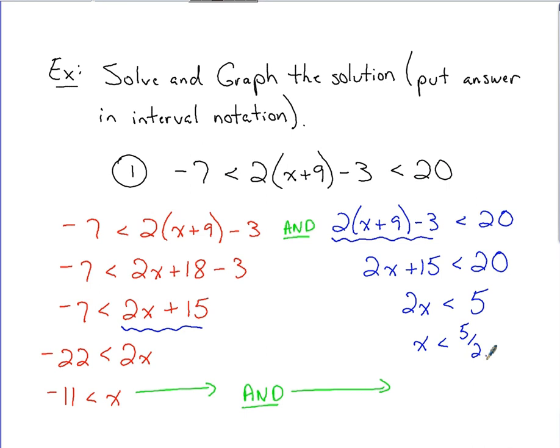So bringing this back together, those two answers, I've got, going from left to right, negative 11 is less than x is less than 5 halves. So I'm showing here that x is falling between those two values.